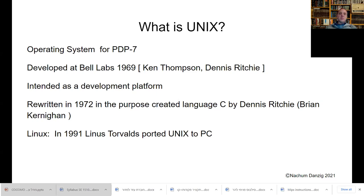Originally, the Unix operating system was written in assembly. Ken Thompson basically realized that they couldn't write a complicated system in assembly, so they started to use a language called B. That didn't work so well either, then they used something called New B, and eventually something called C — when it had structures, that was the moment it actually became easier to write the operating system. They added structures to C.